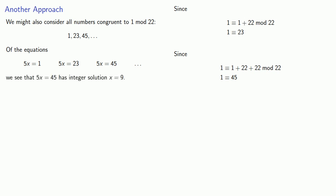And of these, we see that 5x equals 45 has integer solution x equal to 9. And it's useful to remember, integer solutions to an equation are solutions to a congruence.